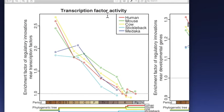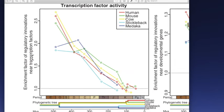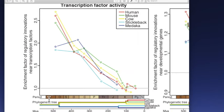Burada transkripsiyon faktörü aktivitesi. İnsan, fare, inek, stickleback yani dikenli balık, medaka da pirinç balığı; iki tane balık var. Şimdi burada enrichment factor of regulatory innovations, yani düzenleyici inovasyonlardaki zenginleşmeler var. Ve bunları transkripsiyon faktörleri yakınındakilerine bakıyoruz. Şimdi burada periyotları sıralamış.